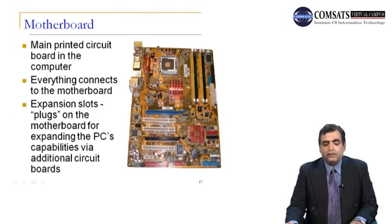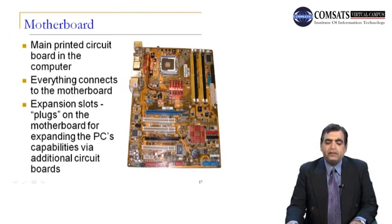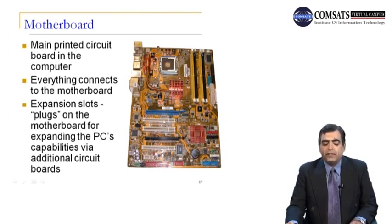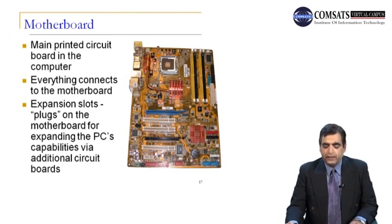In the desktop PC, everything is connected through a thing called the motherboard. The RAM, memory, input devices, output devices, and processor are all connected together on this motherboard. The motherboard is the main printed circuit board in the computer — everything connects to the motherboard. You can see the processor, memory banks, and expansion slots for adding different cards into the system, as well as peripheral attachments. The expansion slots are plugs on the motherboard for expanding the personal computer's capability via additional circuit boards — network interface cards, video cards, sound cards, and modems. In many newer computers, these devices are built directly into the motherboard.